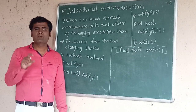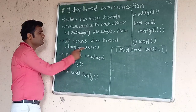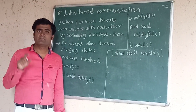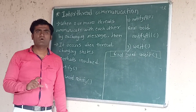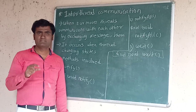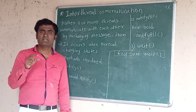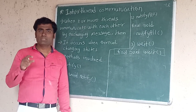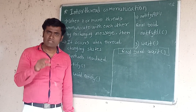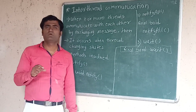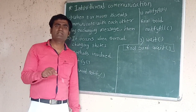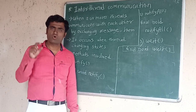Inter-thread communication occurs when threads are changing their states. We have seen the life cycle of threads — threads go through the new state, runnable state, running state, blocked state, and dead state. Inter-thread communication occurs when threads switch from runnable or running state into blocked state, or from blocked state to runnable or running state.